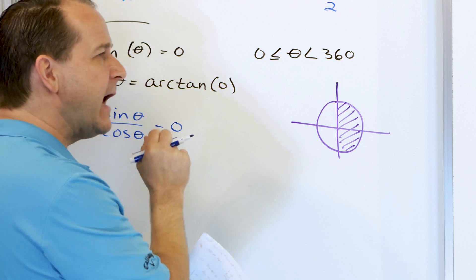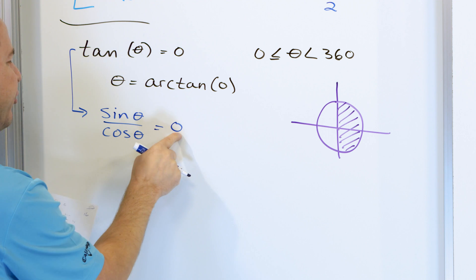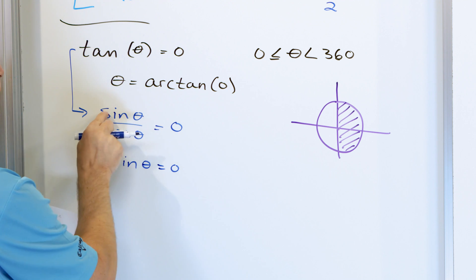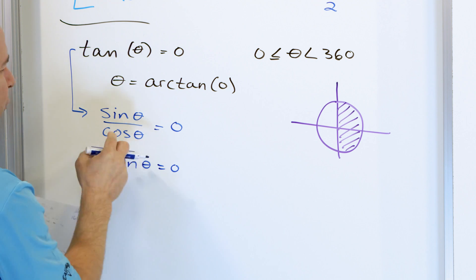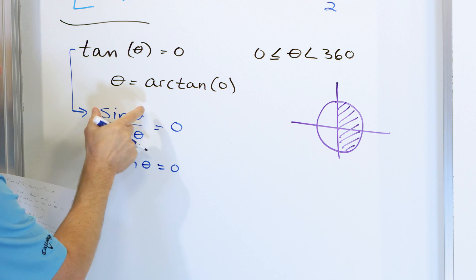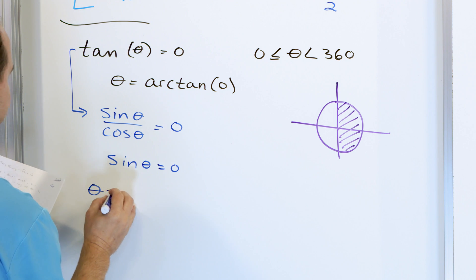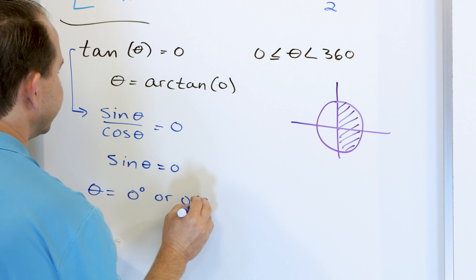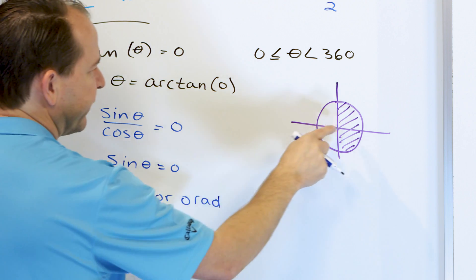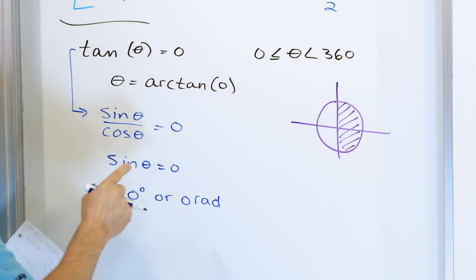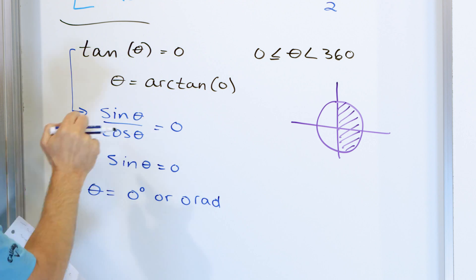If sine over cosine equals zero, what you're figuring out is what angles make that division equal zero. Since you want a zero here, you want the sine of the angle to be zero — because if the numerator goes to zero, you have zero over anything, which gives you zero. So all you have to do is find where the numerator goes to zero. Where is sine of theta equal to zero? The angle is zero degrees or zero radians.